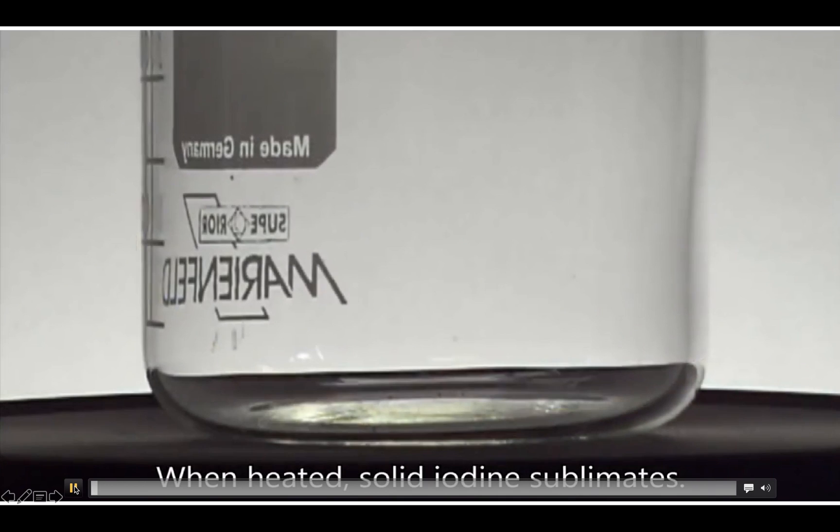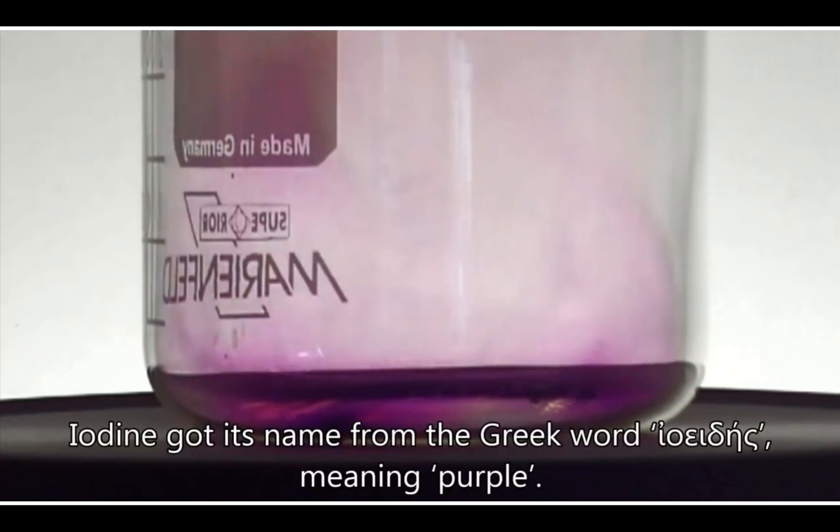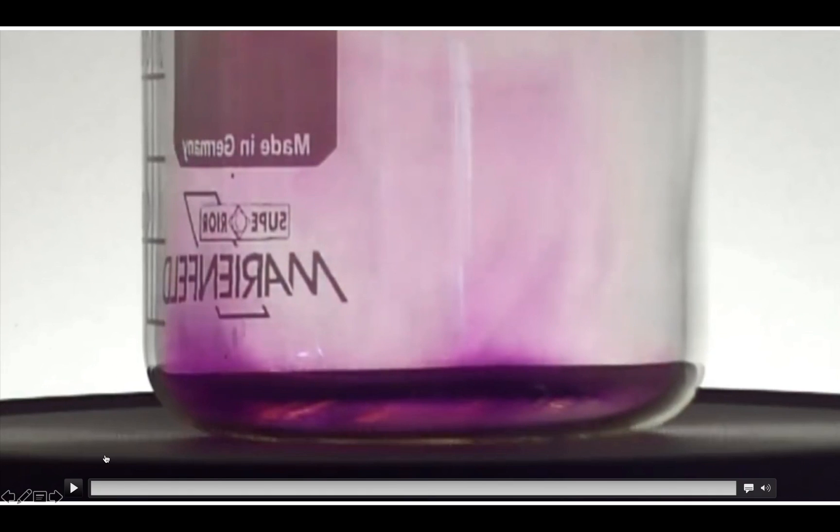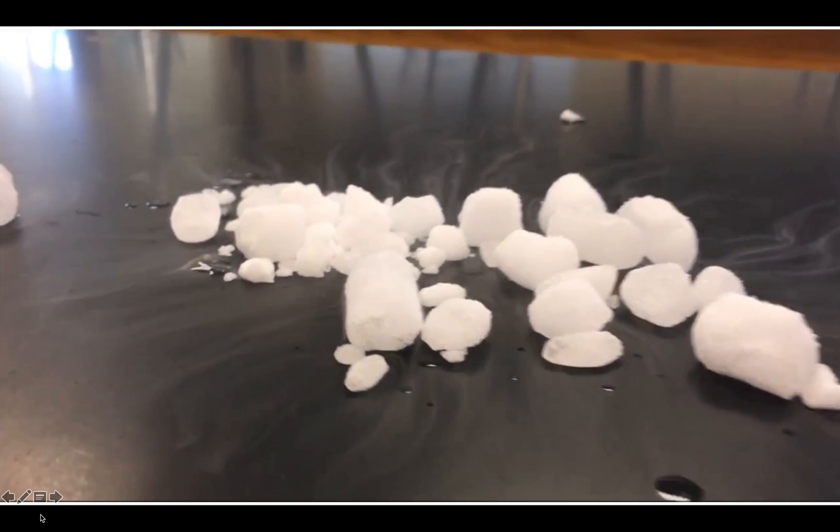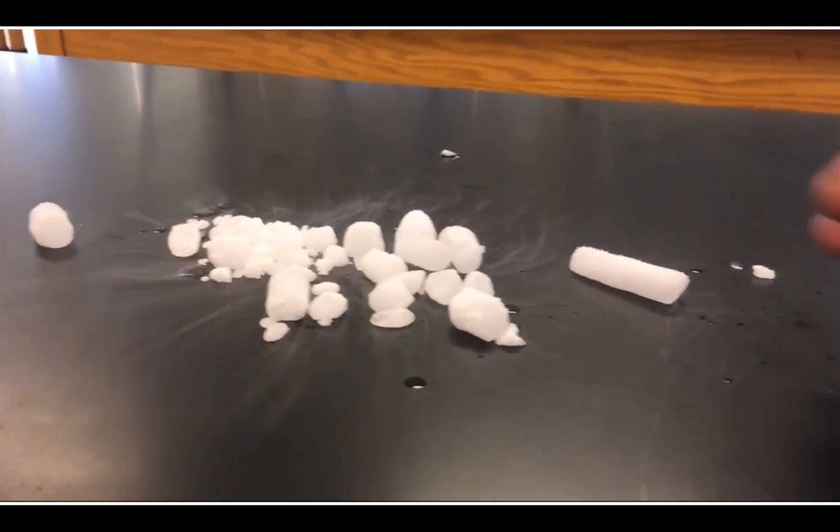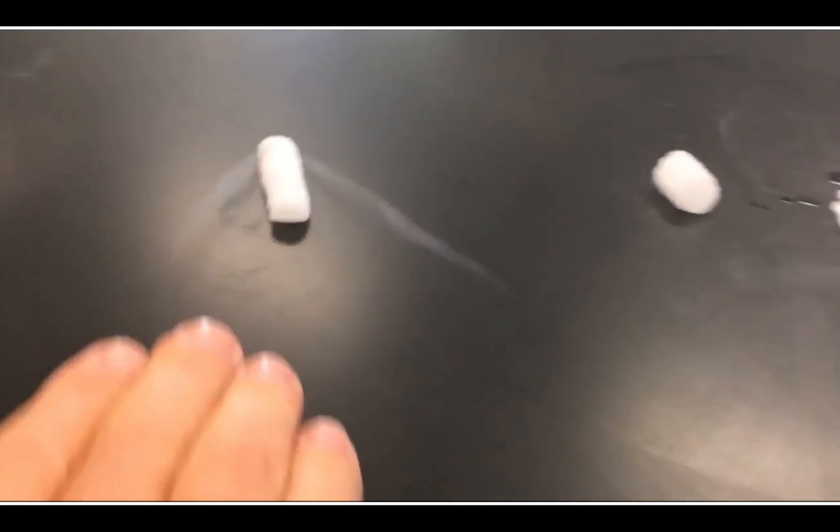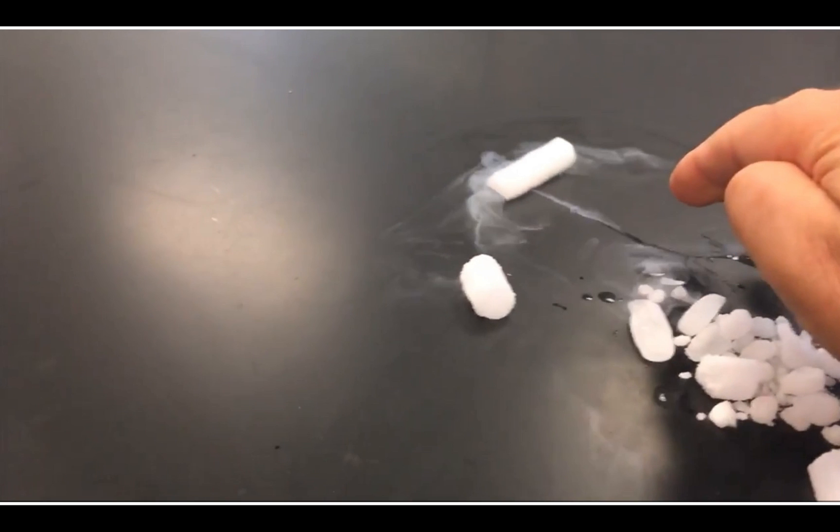Here is iodine subliming—solid iodine pellets. They turn straight into a gas. And then carbon dioxide is another element that does that. So this is solid carbon dioxide, and you can see it going straight to a gas. So that's sublimation.